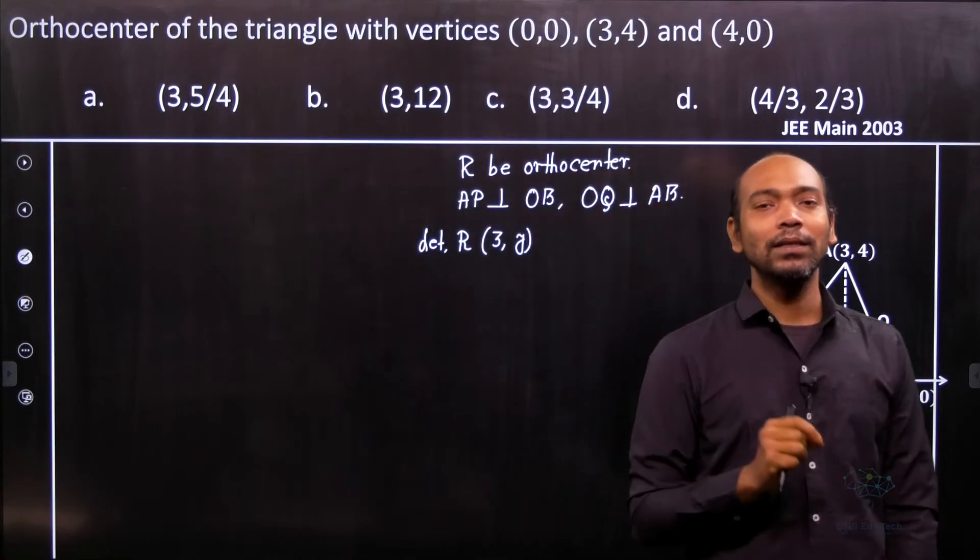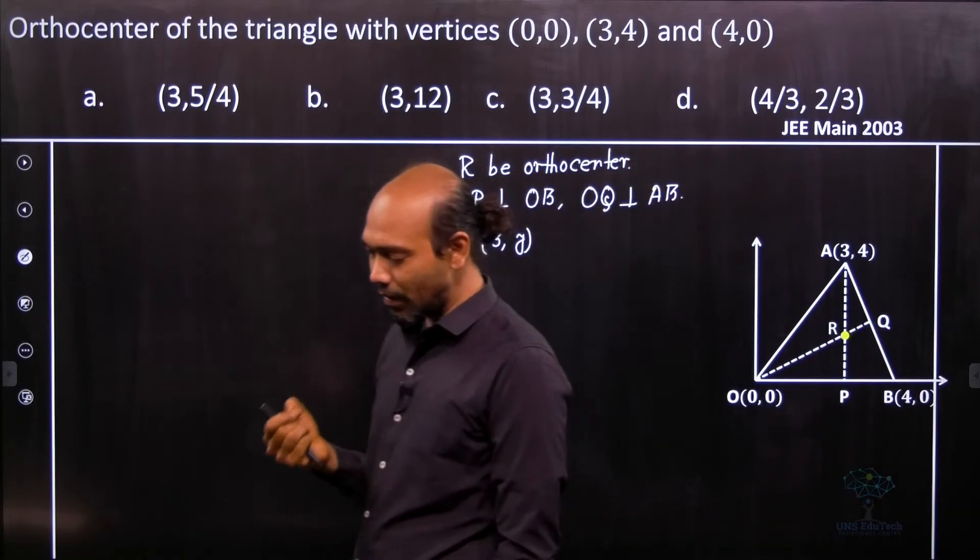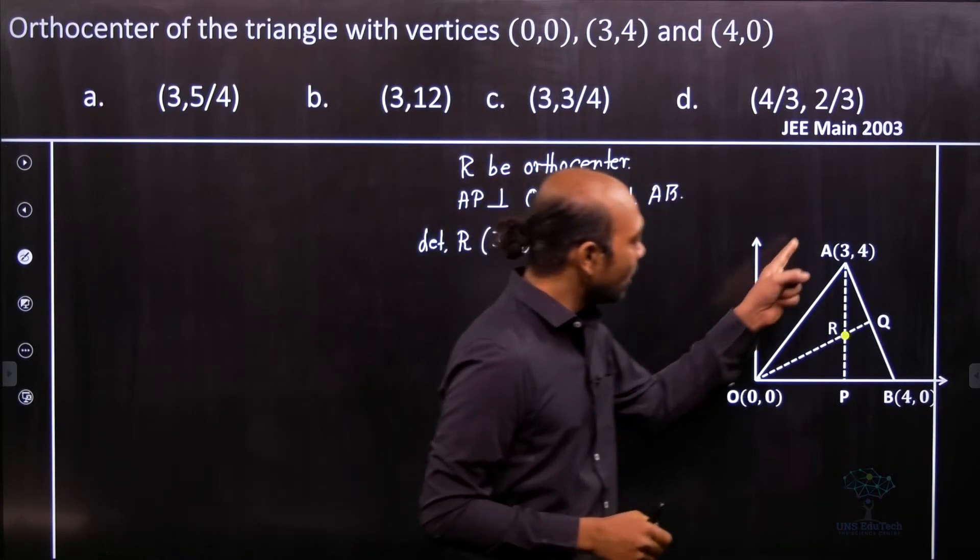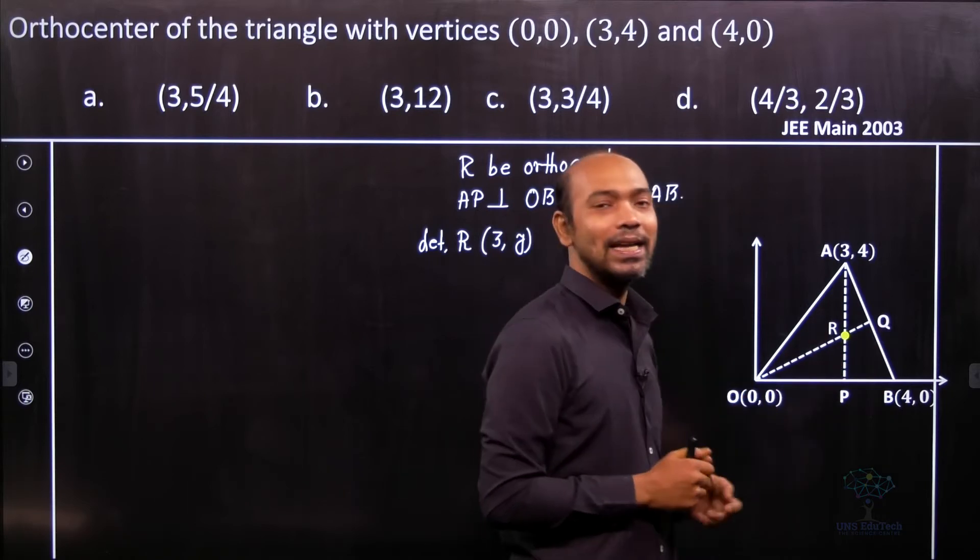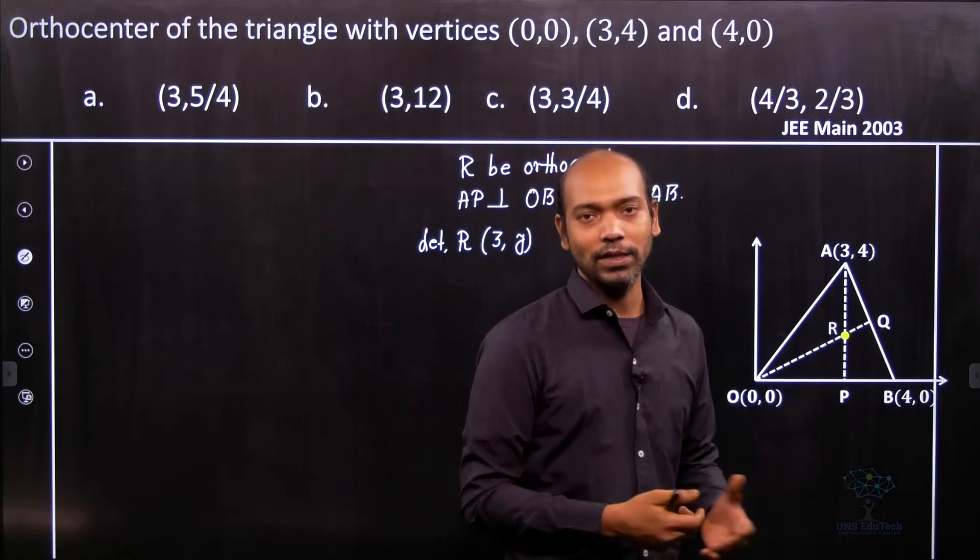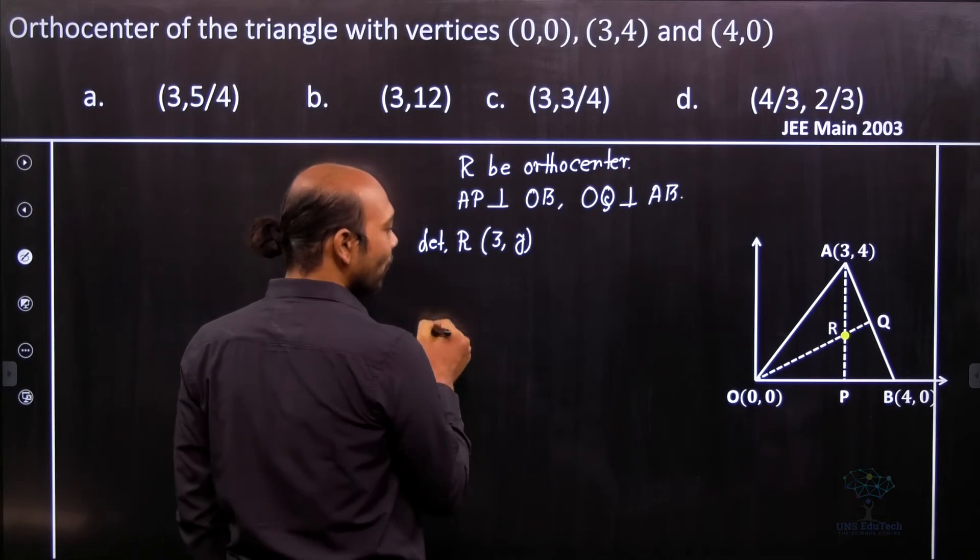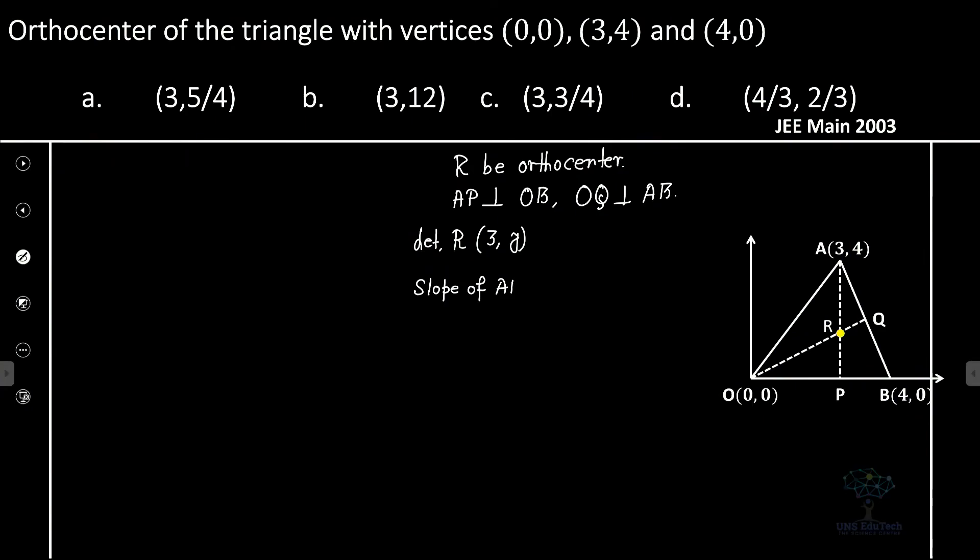Now see what the condition is and how we apply so that we can find out the coordinate of y. See AB and OQ are perpendicular. Obviously the product of the slopes are minus 1. So let us calculate the slope of AB. So slope of AB if I consider it as M1. So therefore M1 is definitely equal to 4 minus 0 divided by 3 minus 4. That gives you minus 4. That's the slope of AB.